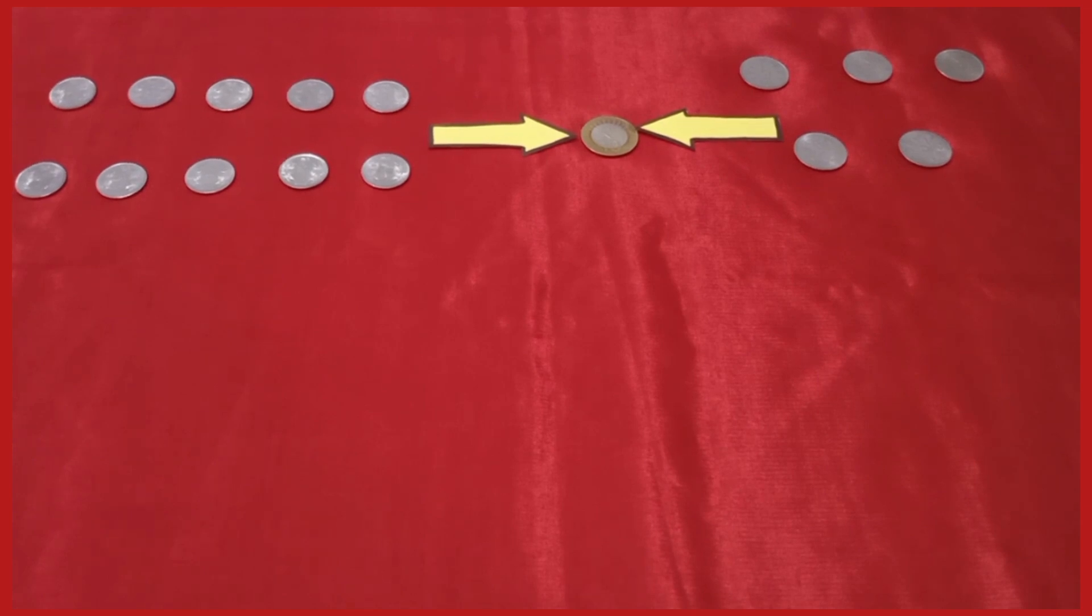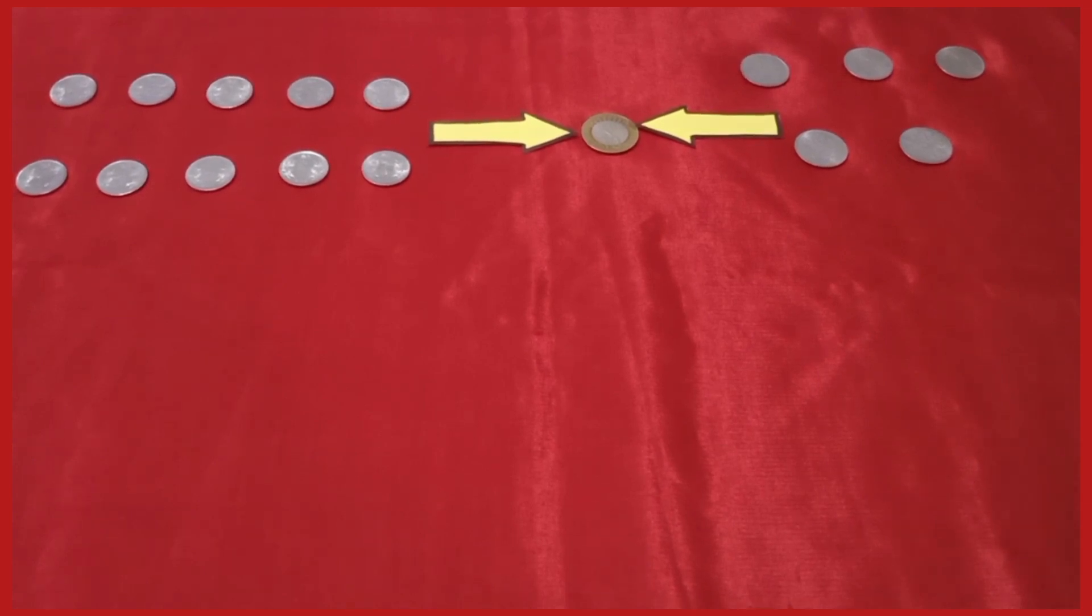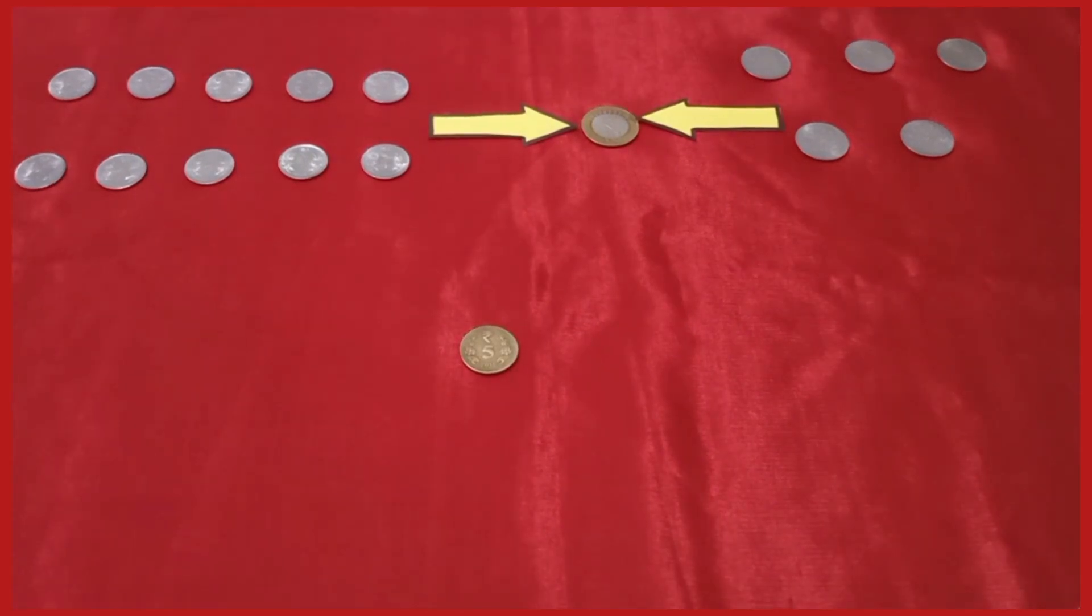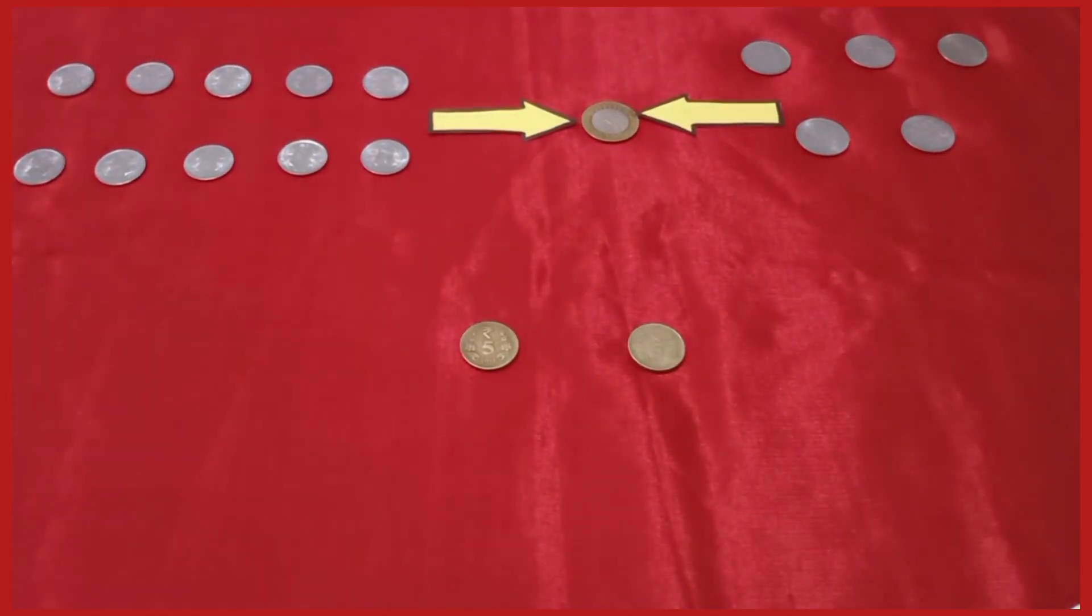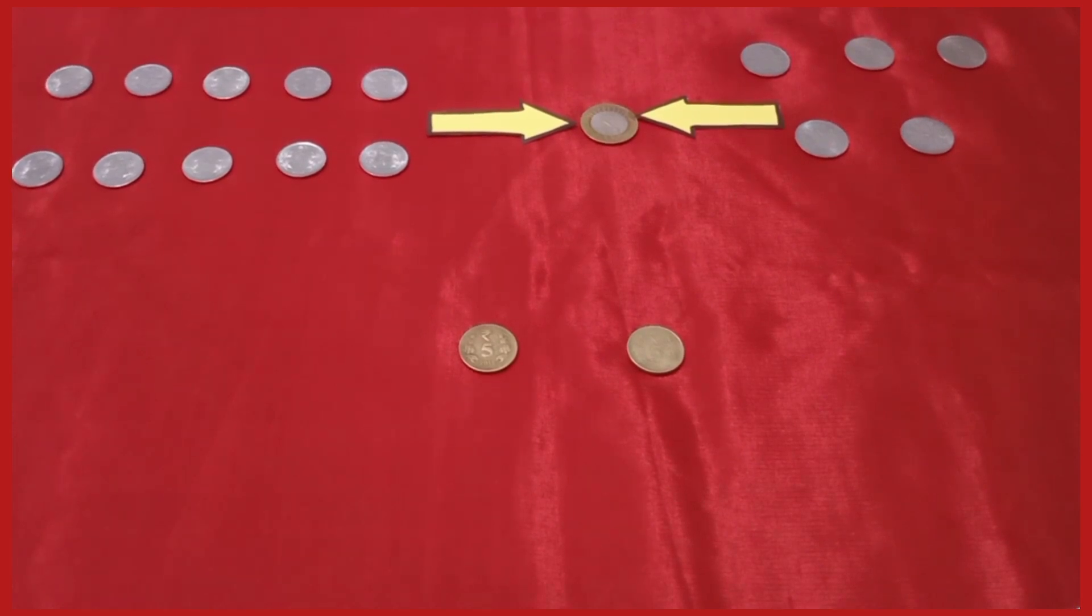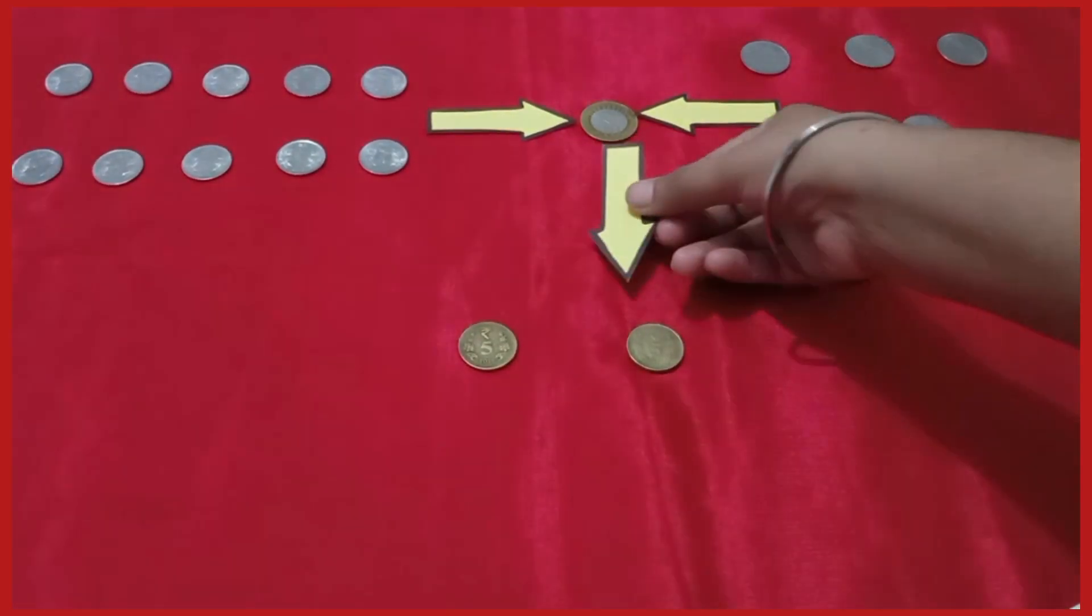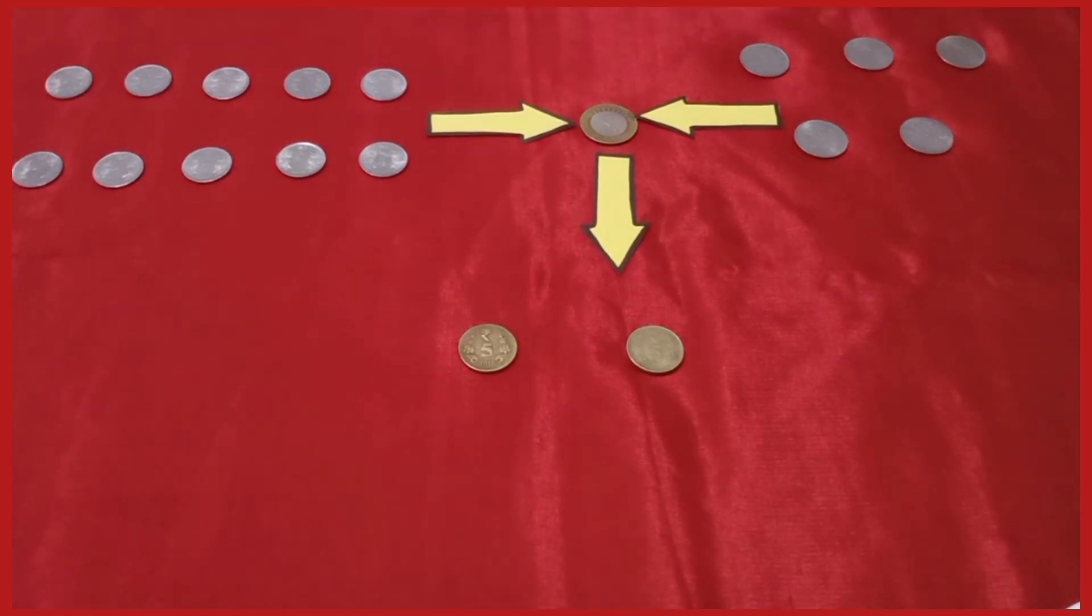Dear students, let us see how many 5 rupee coins make a 10 rupee coin. It's 5, and 5 plus 5 is 10. So students, 1 ten-rupee coin is equal to 2 five-rupee coins.